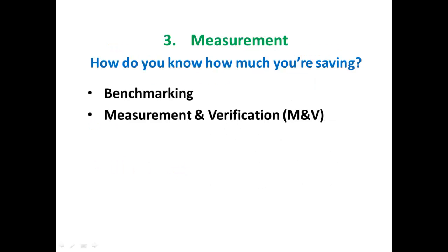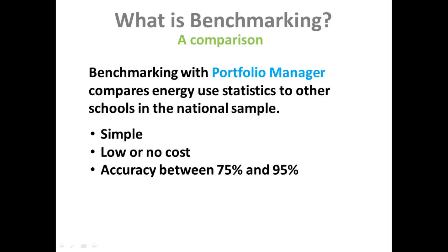Next is measurement. The question is: how do you know how much you're saving? There are two methods. One is benchmarking, which we've been discussing. When benchmarking with Portfolio Manager, you're comparing your energy use statistics that are weather-normalized, so you can compare them directly with other schools across different climate zones based on a national sample. This process is simple, low cost, and has accuracy between 75 and 95 percent.